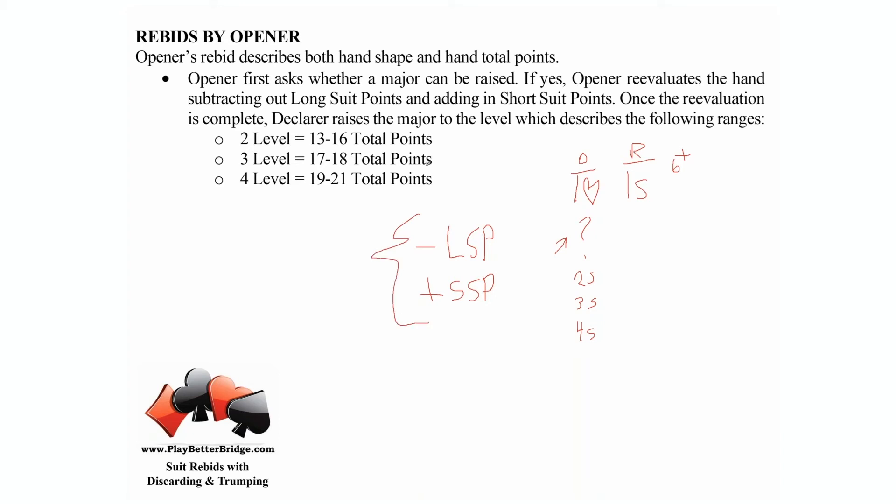That's just a re-evaluation. We work a lot of this in modern bidding, subtracting out long suit points and adding in short suit points. I'm just introducing it to you here.